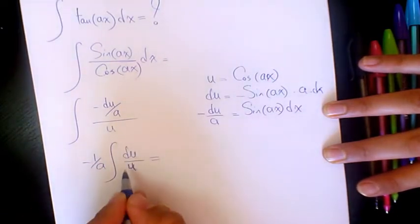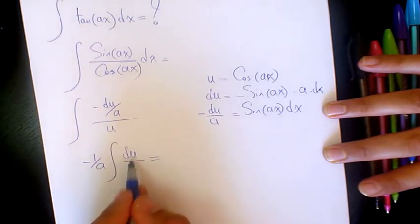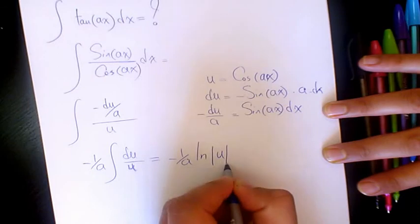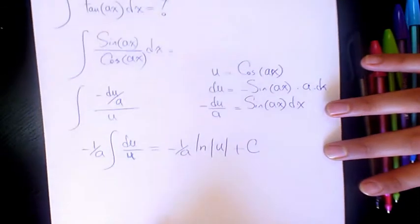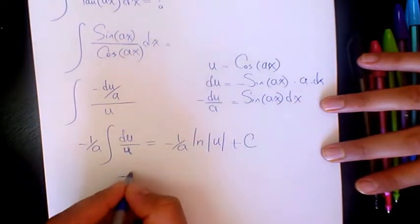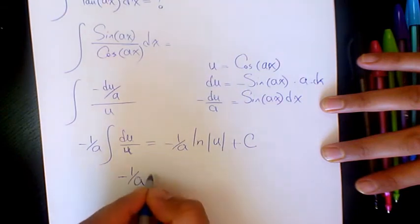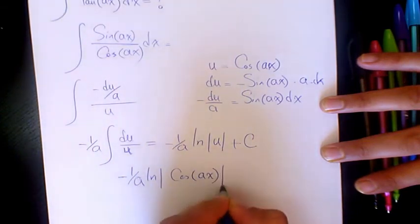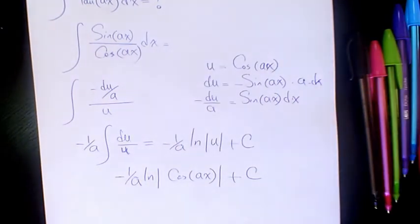And after that I can say that the integral of du over u is going to be ln u plus a constant number. So it's going to be negative 1 over a ln cosine ax plus a constant number.